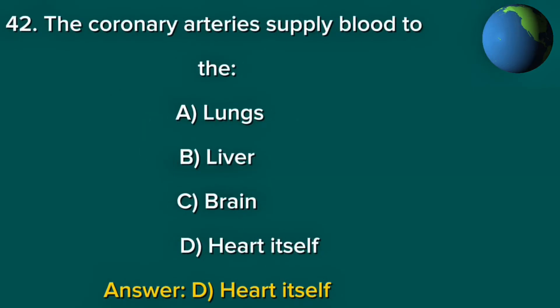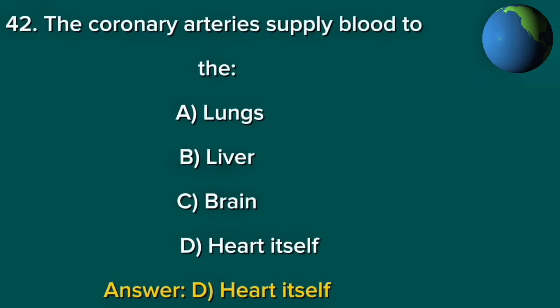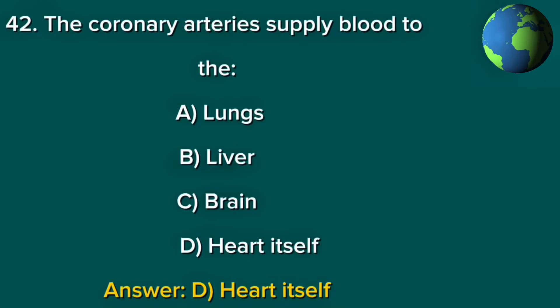Question 42. The coronary arteries supply blood to the: A. Lungs. B. Liver. C. Brain. D. Heart itself. Answer: D. Heart itself.